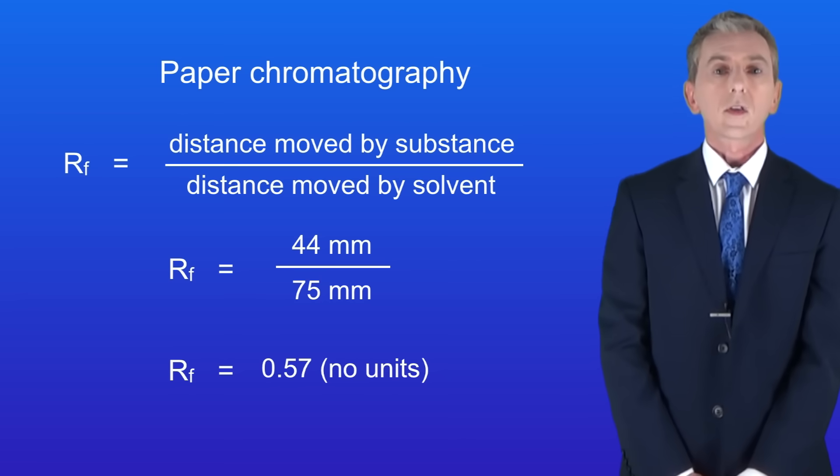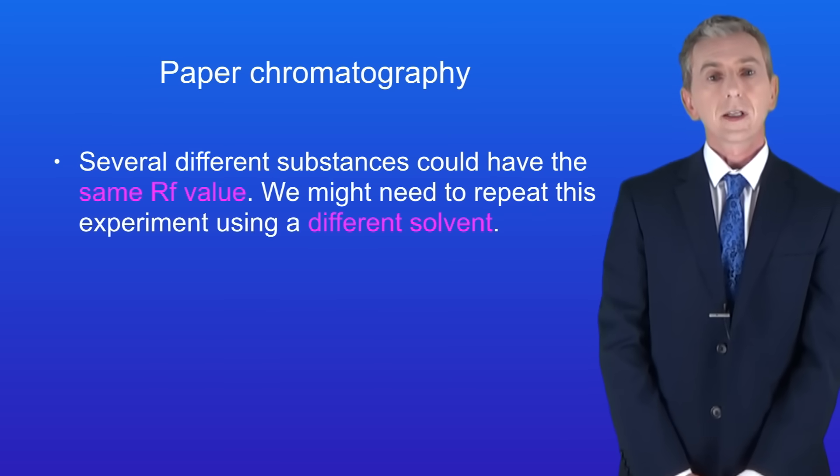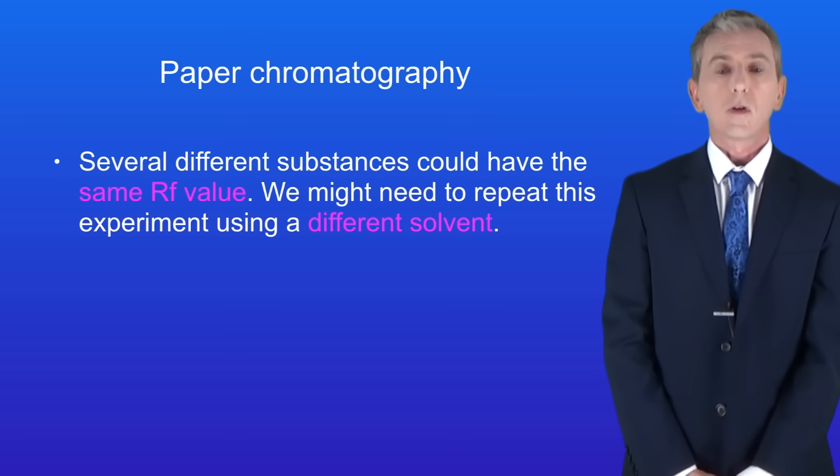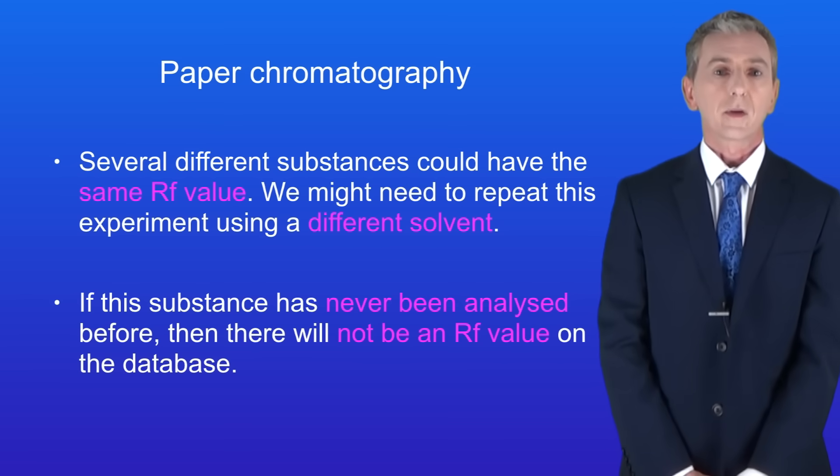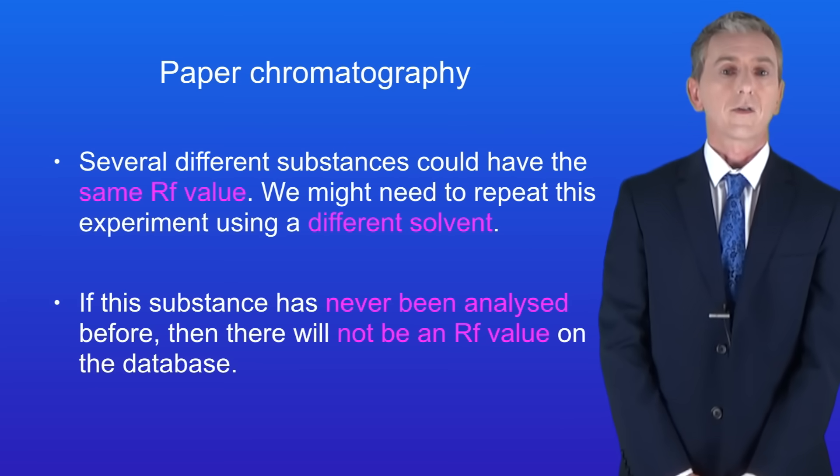We can now look this RF value up in a database and that will tell us the identity of the substance. Now I should point out that several different substances could have this RF value. So we might need to repeat this experiment using a different solvent to narrow it down further. Also if this substance has never been analyzed before, then there will not be an RF value on the database. So we'd need to carry out further analysis to identify it.